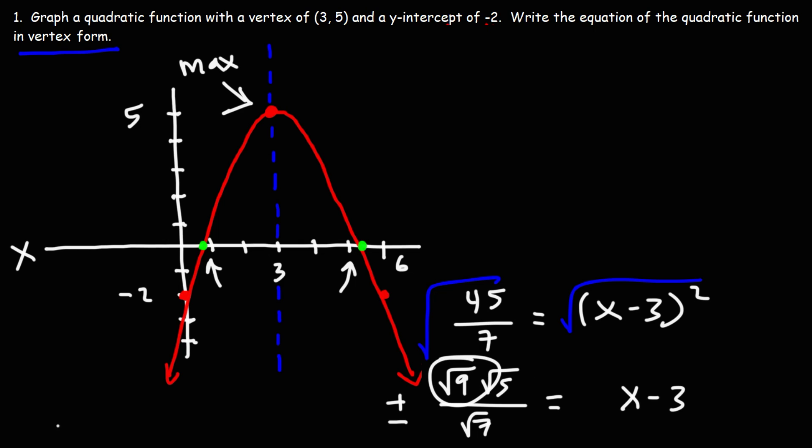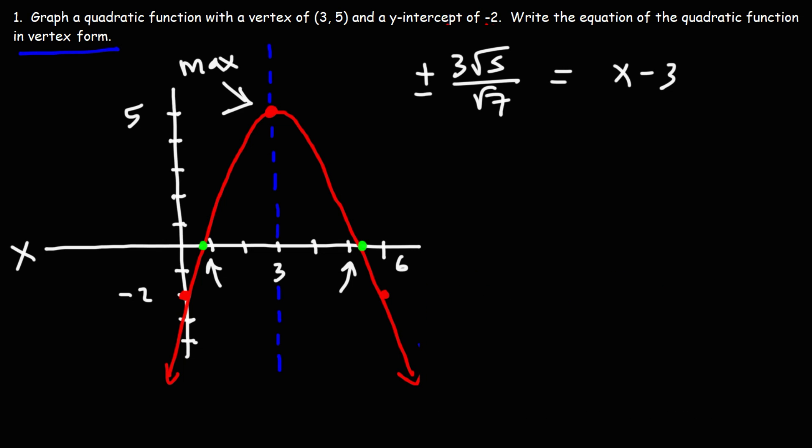Now the square root of 9, that's going to be 3. And then we have the square root of 5 over the square root of 7, and that's equal to x - 3. Now I'm going to rationalize this. I'm going to multiply the top and the bottom by radical 7. So I'm going to get ±3√35/7. That process is called rationalizing the denominator.